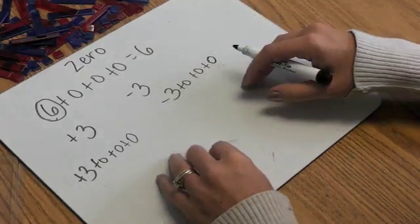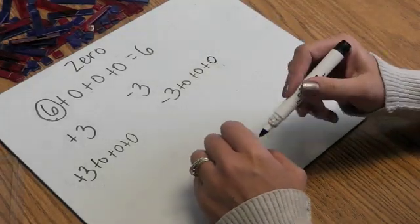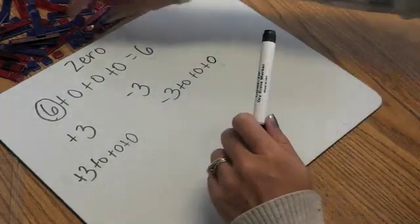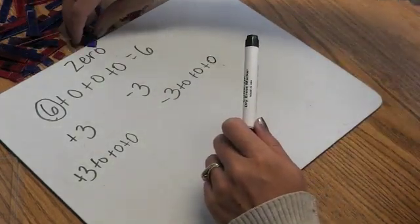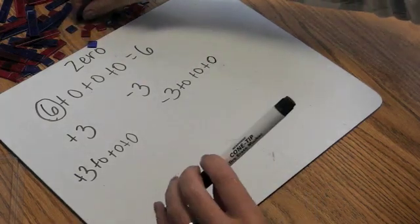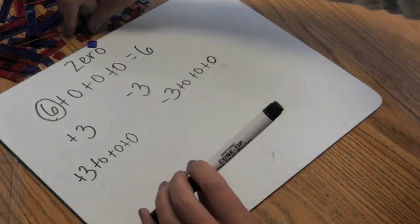And then, how do we get kids to start to visualize this? Well, we can use integer disks or algebra tiles, I have algebra tiles here. You can also just have them draw things out, I'll show you that in a second too.